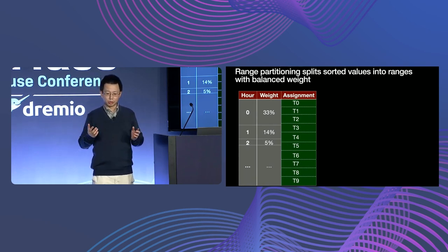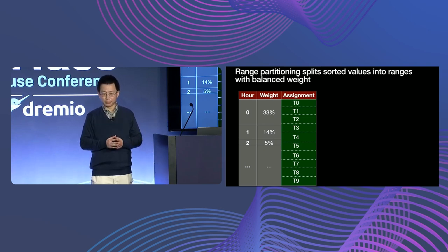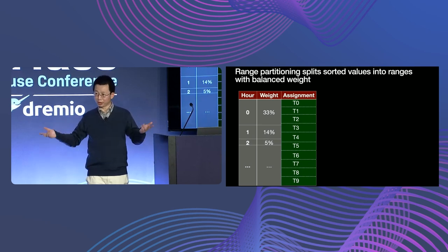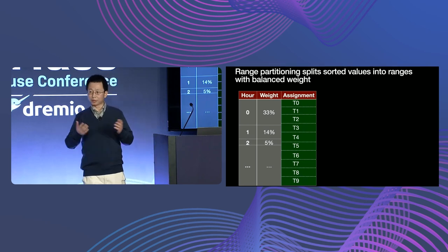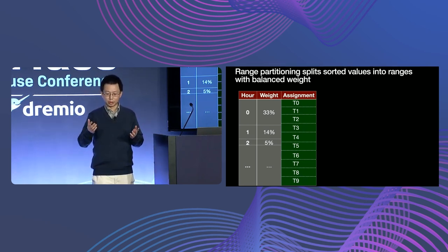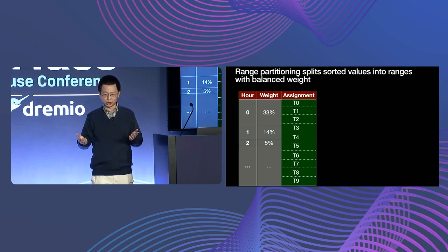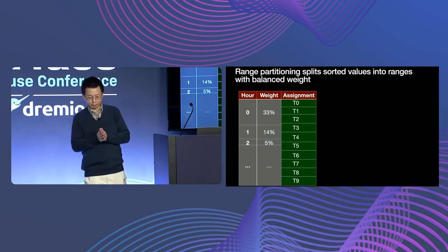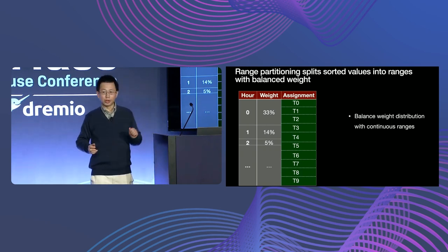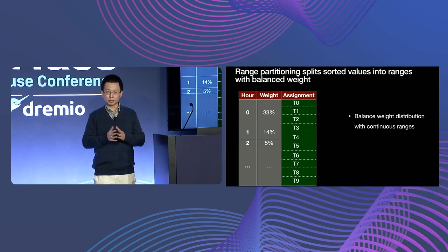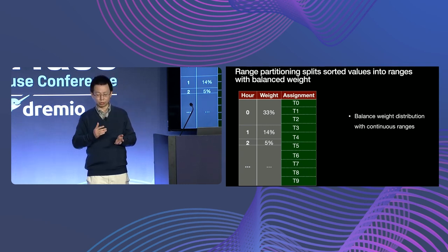The second step is the actual shuffle. We use a range partitioner — a custom partitioner in Flink that is given a key and number of partitions and selects a downstream task to output to. We use range partitioning to split the sorted event hours into ranges, with the goal that each range has roughly the same amount of traffic weight. For example, hour 0 has a lot of data and may get assigned across tasks t0, t1, t2, and t3. Each task only processes a continuous slice of the sorted range, balancing weight distribution.